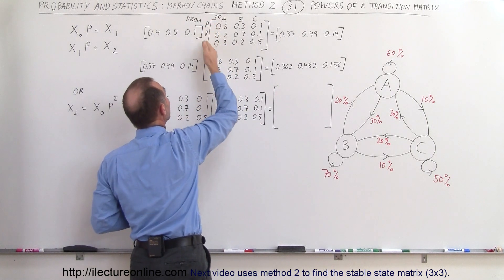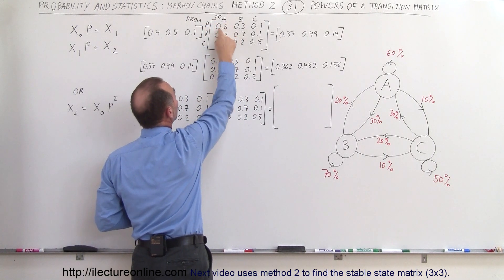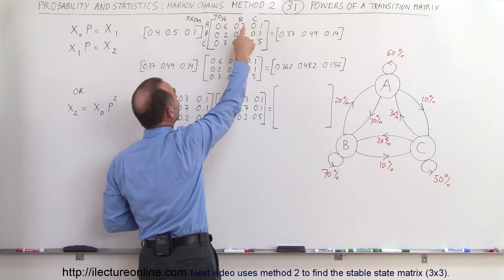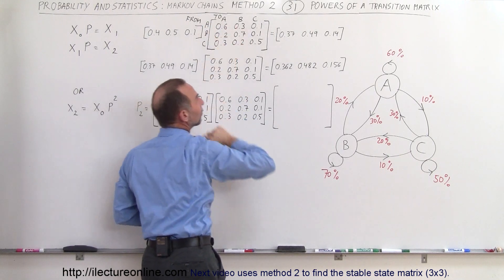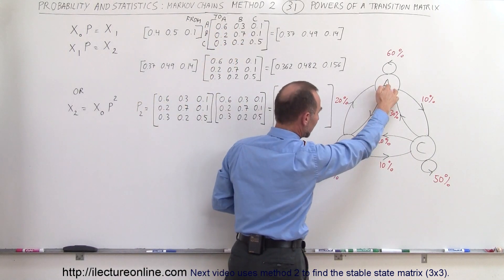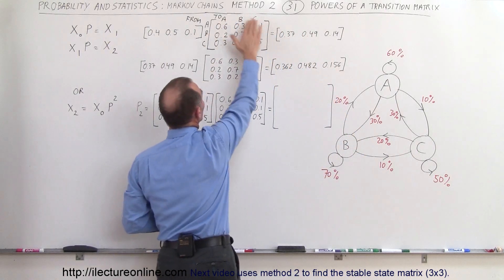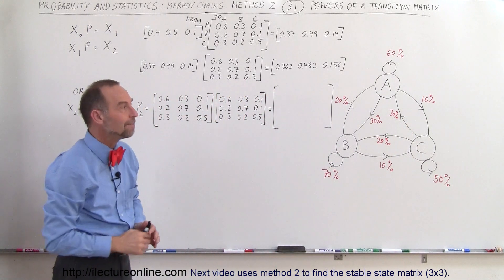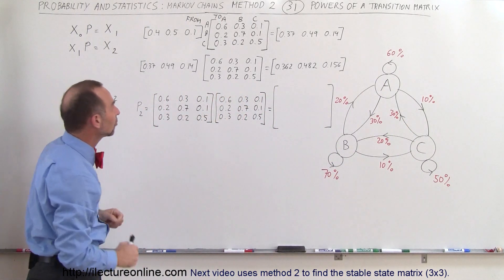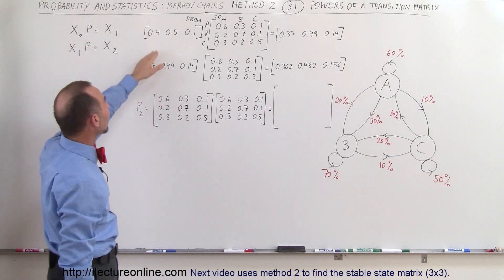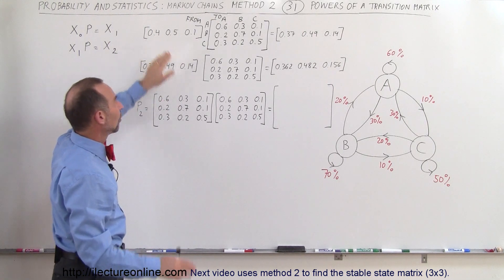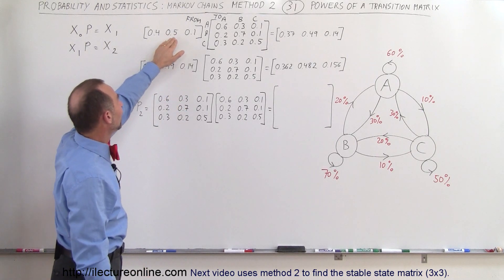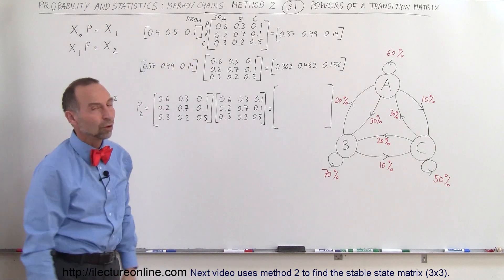Here we have an example with three stores: A, B, and C. We had customers going back and forth between the stores, and also customers loyal to a store staying there — for example, 70% of customers that go to store B stay in store B. The transition matrix shows entries like 0.6 from A to A, meaning 60% of customers stay in store A, and 30% go from A to B. The initial state matrix shows that 40% go to A, 50% go to B, and 10% go to C.